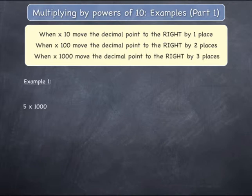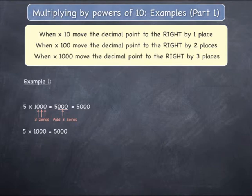Example 1, 5 multiplied by 1000. Write your starting number, 5, and if that starting number does not have a visible decimal point, you can count the number of zeros in the power of 10, which in this case is 3, and add that many zeros onto the end of the starting number, giving an answer of 5000. 5 multiplied by 1000 equals 5000.